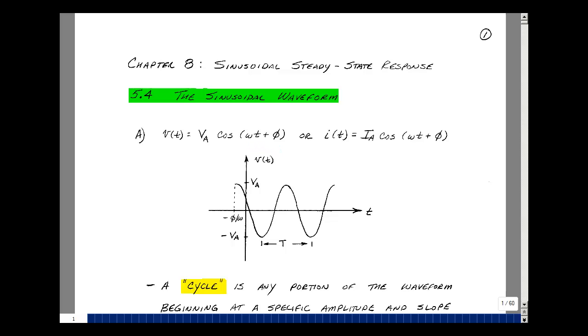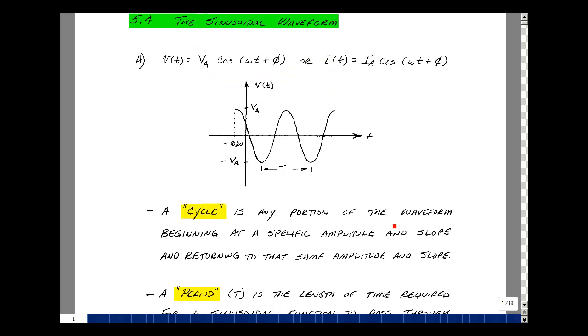With sinusoids, there are some terms that we need to review. The first one is called a cycle, and this is any portion of a waveform beginning at a specific amplitude and slope, and then returning to that same amplitude and slope. So if we picked a point here, you would have the same amplitude and slope roughly over here, and that would be one cycle. Now the time it takes to go from the first point to the second point is called a period.